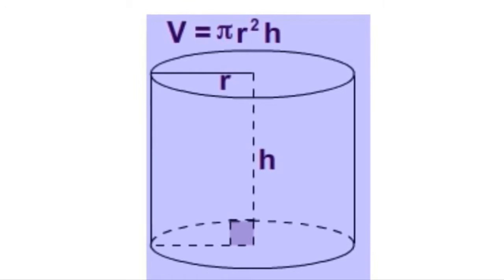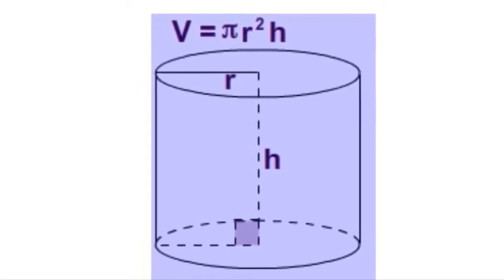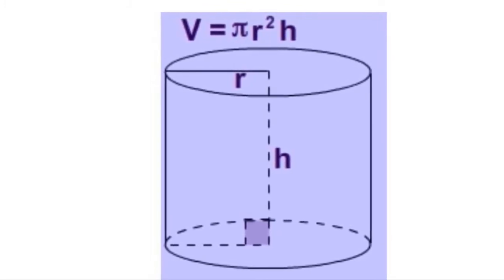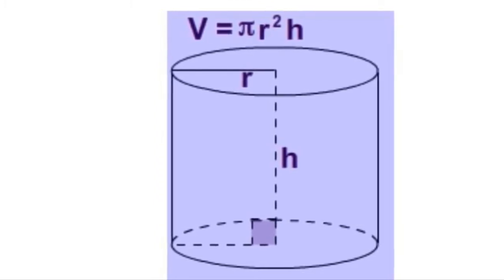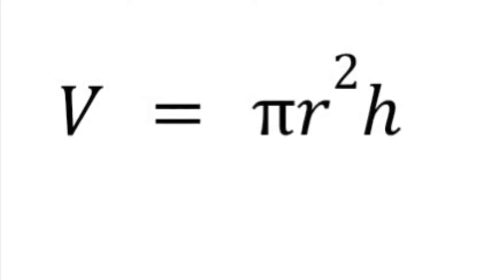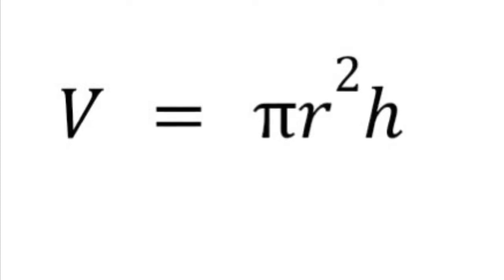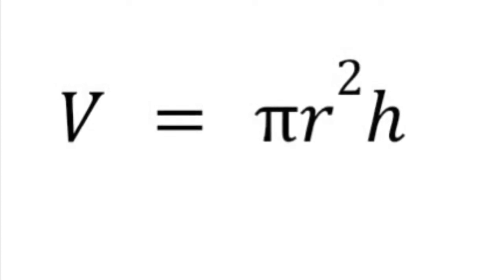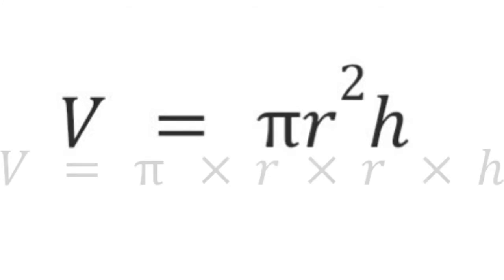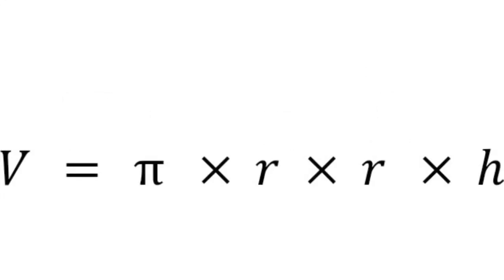So first, let's look at the volume question. This is a cylinder, and the formula for the volume of a cylinder — remember, volume means how much would fit inside — is V equals Pi R squared H. We looked at that formula when we were in class together. When in math you have letters right next to each other, it means we are multiplying those letters. So V equals Pi R squared H really means V equals Pi times R times R times H. The reason that there are two R's is because it was R squared — so Pi times R times R times H.